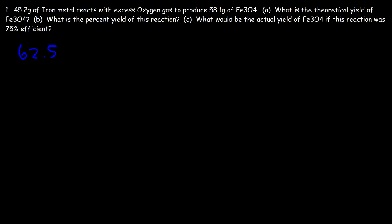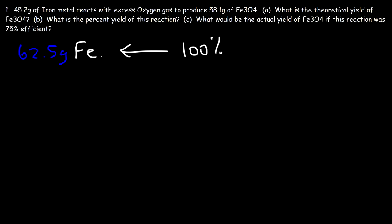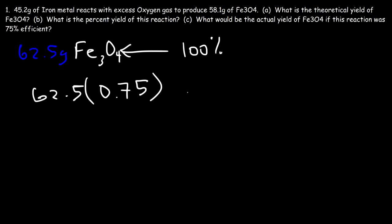The theoretical yield is still 62.5 grams — we're going to need that value. Part C: what would be the actual yield of Fe3O4 if this reaction was 75% efficient? If the process was 100% efficient, the actual yield would be the same as the theoretical yield, which is 62.5 grams. If it's 75% efficient, we should get 75% of the theoretical yield. So we multiply 62.5 by 0.75, and the actual yield would be 46.9 grams of iron oxide.